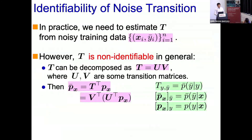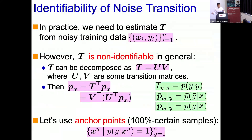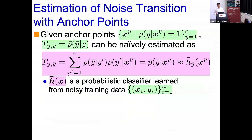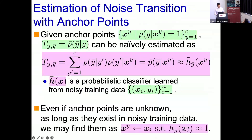The problem is that T is non-identifiable in general. T can be decomposed into the product of two transition matrices U and V, so we can manipulate the solution in an arbitrary way. To avoid this, we may assume strong conditions like anchor points — training points that have 100% certain label correspondence. Given anchor points, we can estimate T naively: h bar is a probabilistic classifier learned from noisy training data, and we use its output as T at an anchor point.